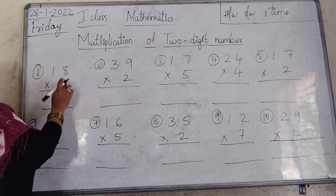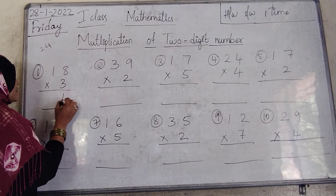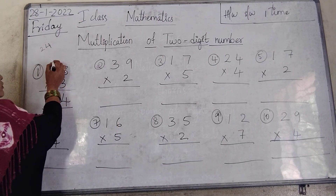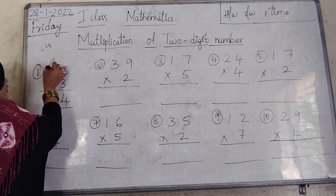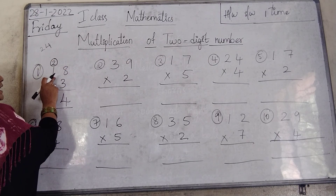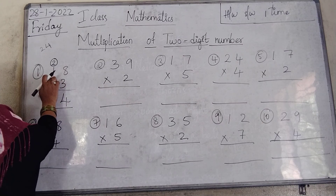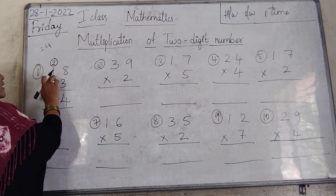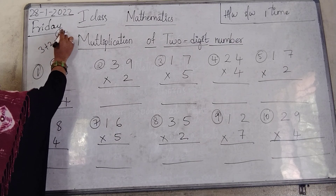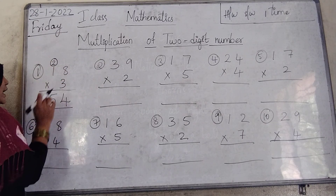So we have to write 4 in the 1st place, and carry 2 to the 10th place — up above the 1. See here, this is the 10th place, we carry 2 here. 3 ones are 3, plus carrying 2: 3 plus 2 equals 5. See the product: 18 into 3 equals 54.